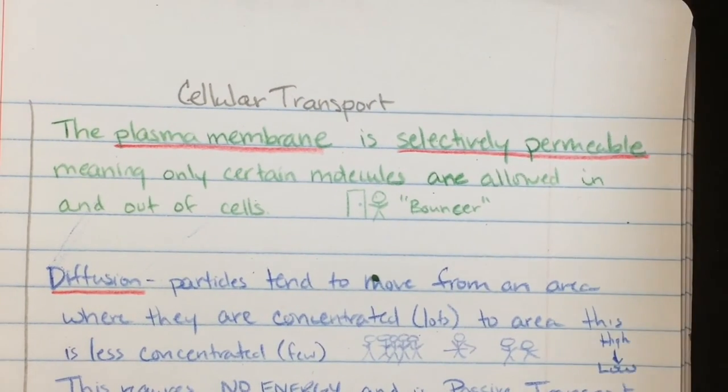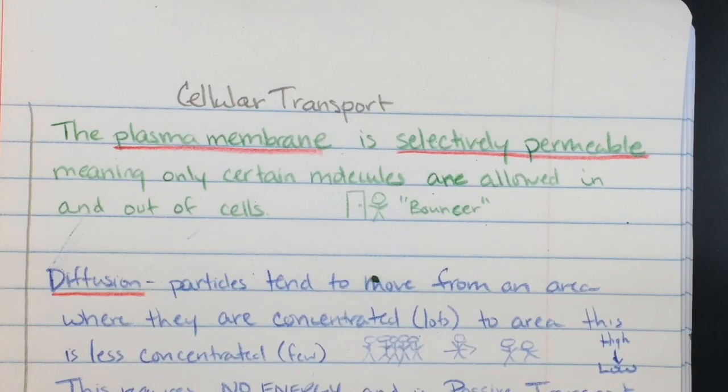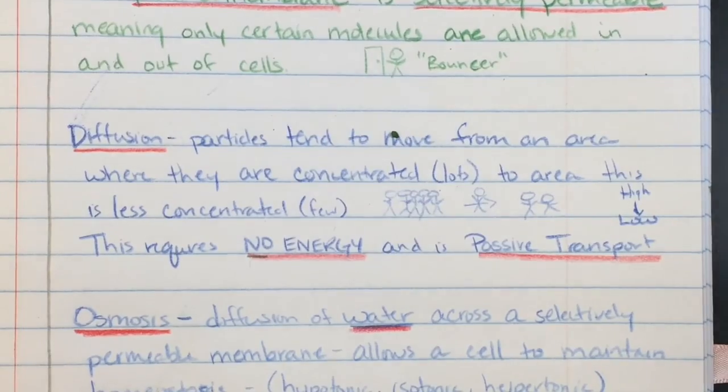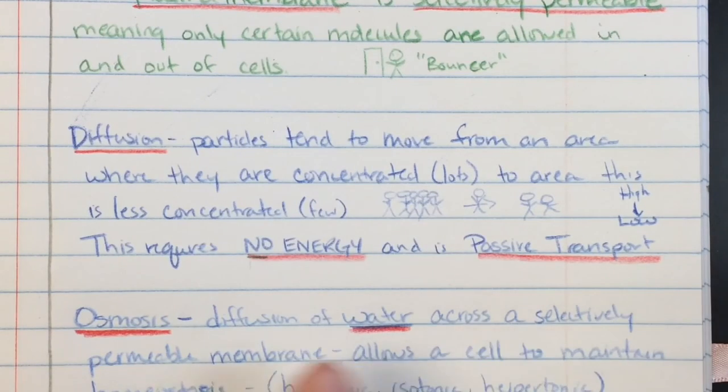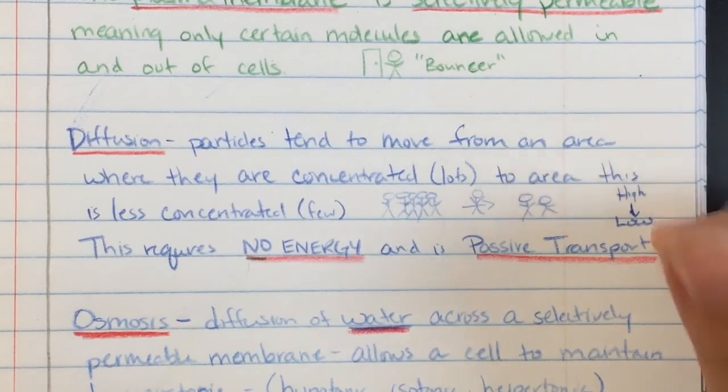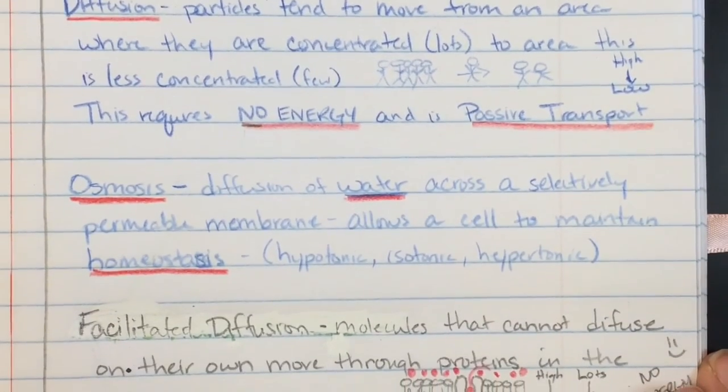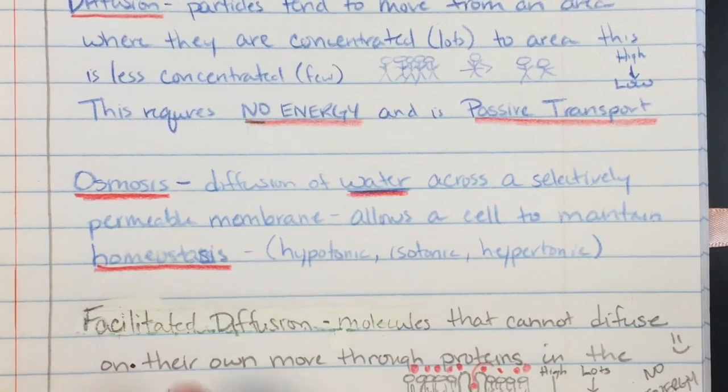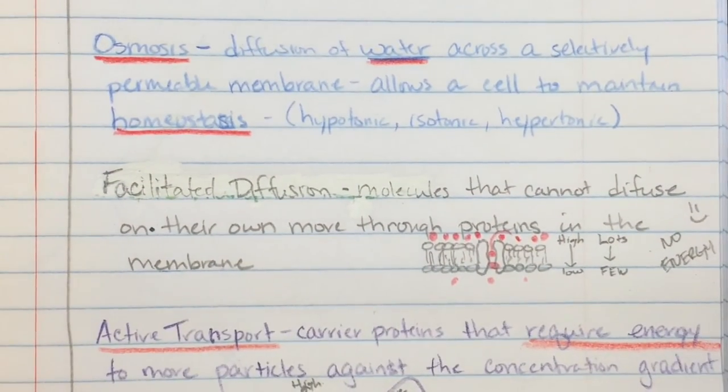So here we have cellular transport. The plasma membrane is selectively permeable meaning only certain molecules are allowed in and out of the cells like a bouncer. In diffusion, particles tend to move from an area of high concentration, or from an area where they are concentrated, there's lots of them to an area of less concentration. So we go from a big group to just a few from high concentration to a low concentration. This requires no energy and is passive transport. Osmosis, the diffusion of water across the selectively permeable membrane, allows the cell to maintain homeostasis through hypotonic, isotonic, and hypertonic processes.